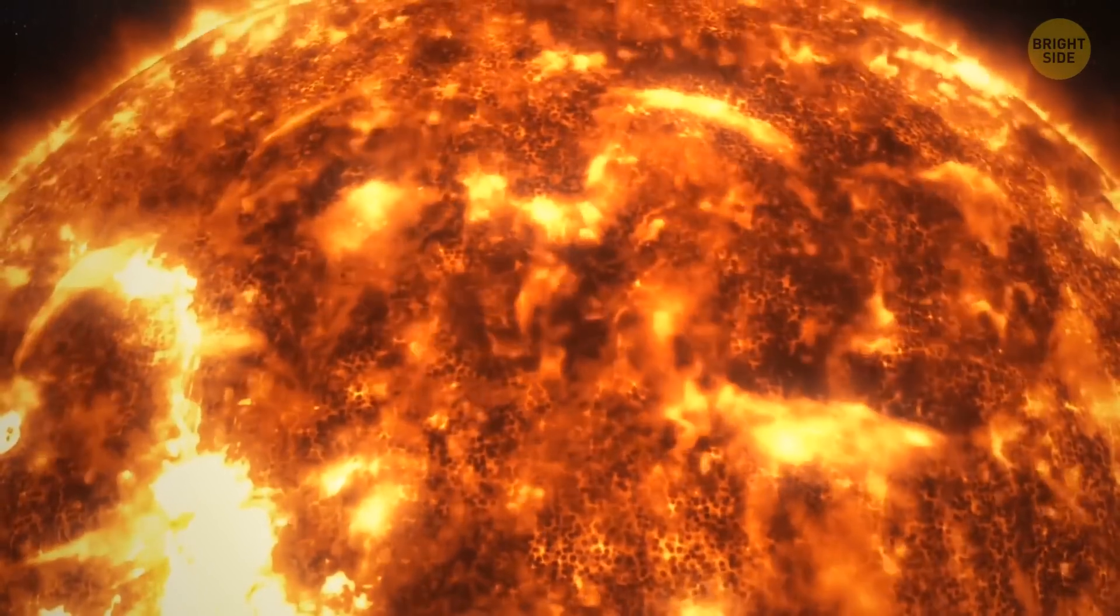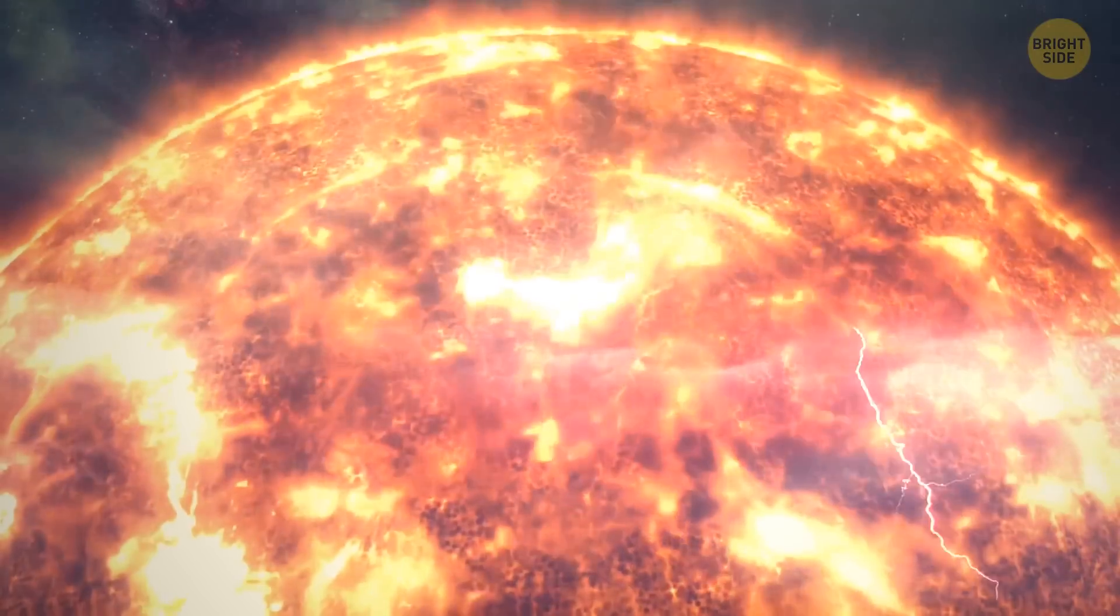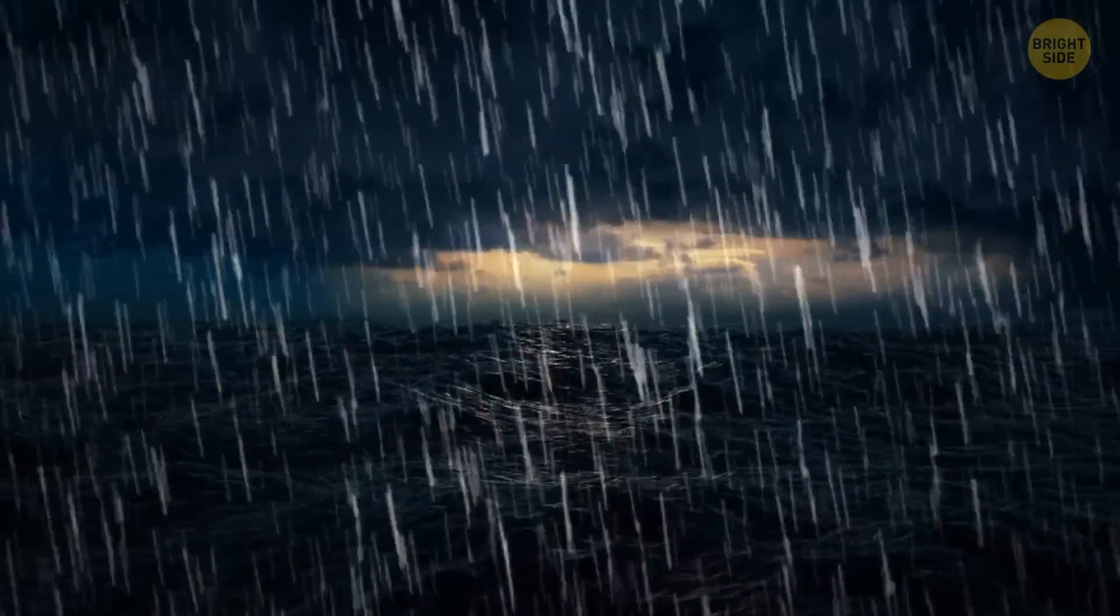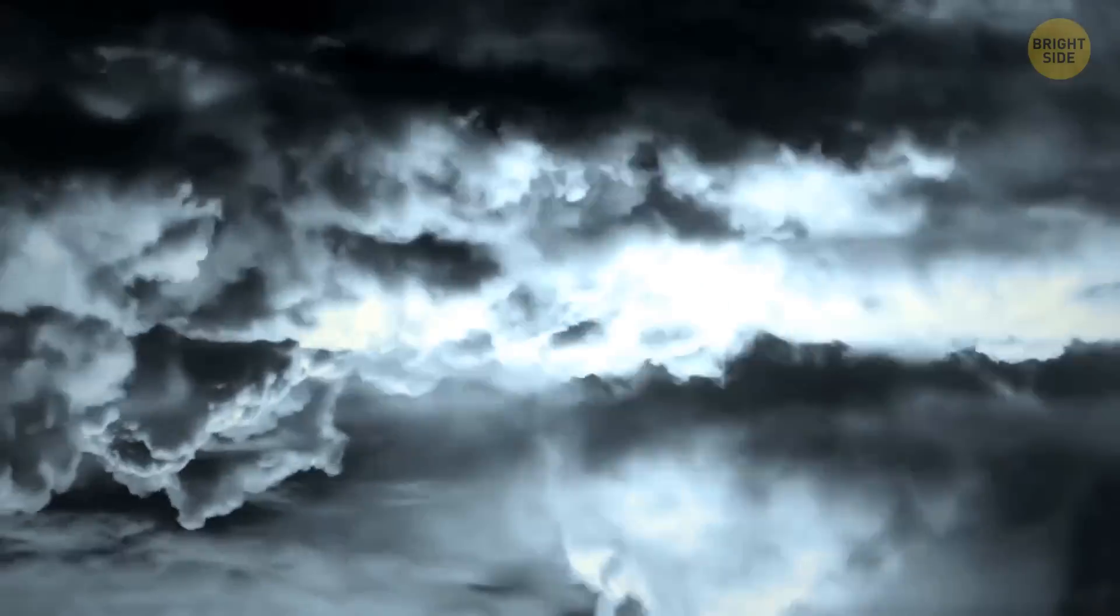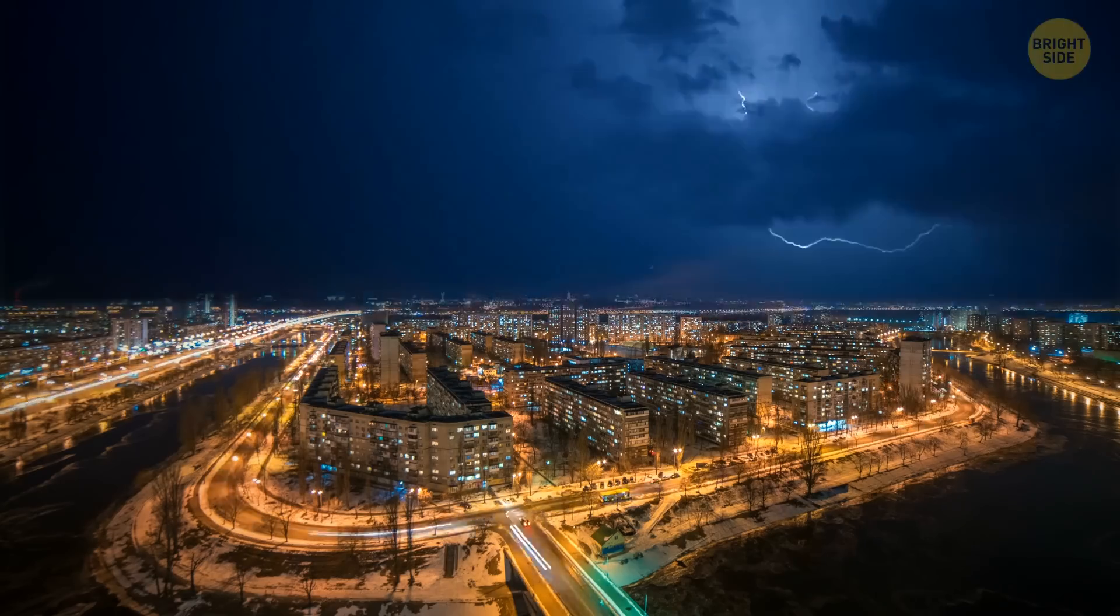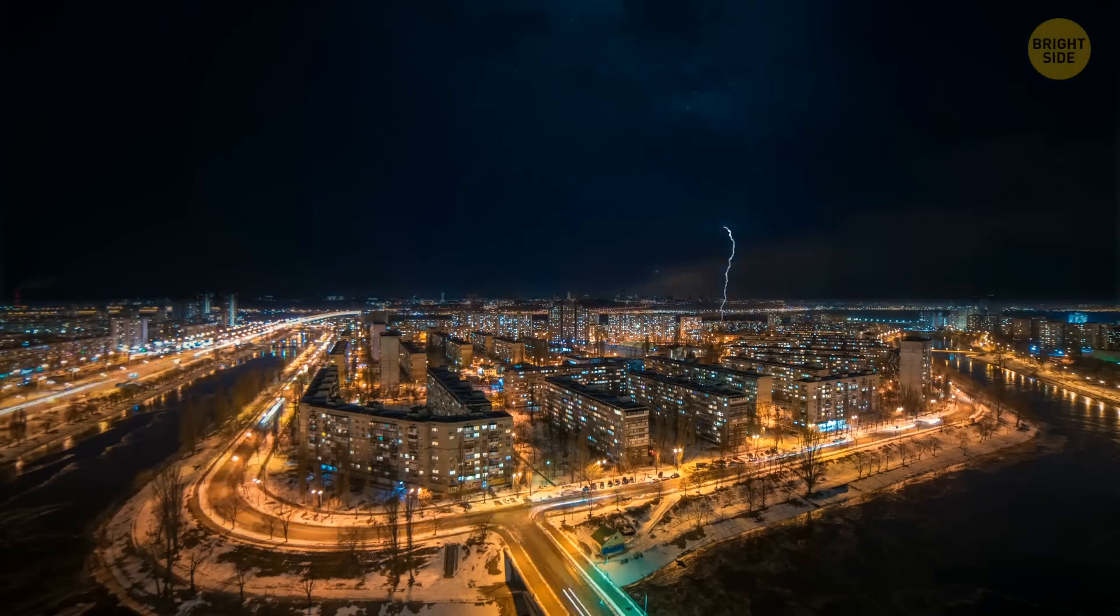The Sun's surface is scorching hot, but a bolt of lightning is five times hotter. Earth gets struck by 100 lightning bolts every second, which results in 8 million lightning strikes a day and around 3 billion a year. Ooh, shocking!